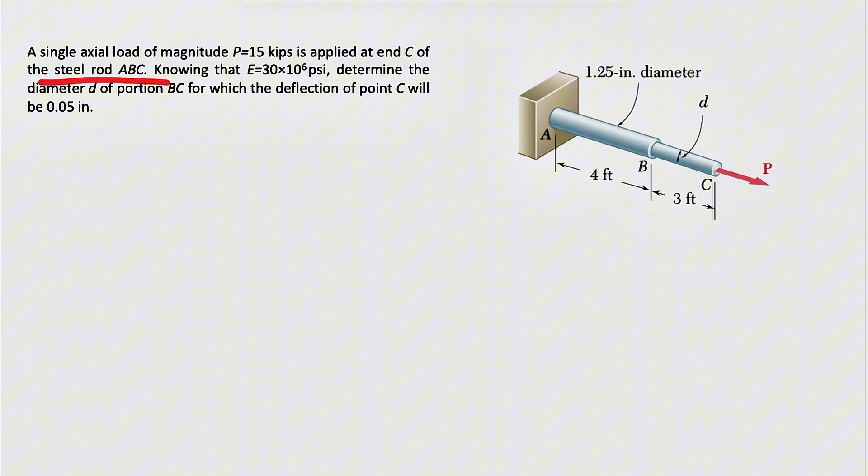We have a steel rod ABC, we know that the elastic modulus is 30 million psi, and we need to determine the diameter of the portion BC which the deflection of point C will be 0.05.